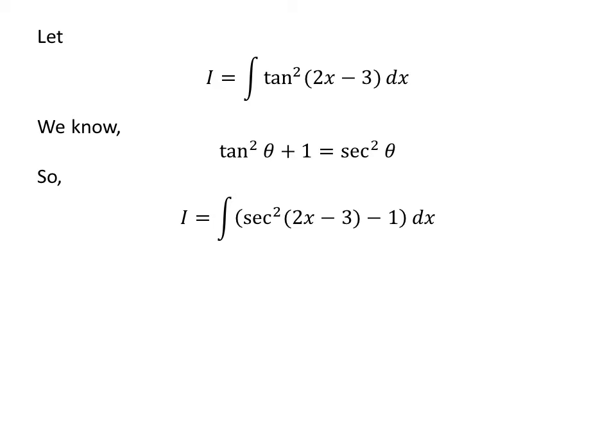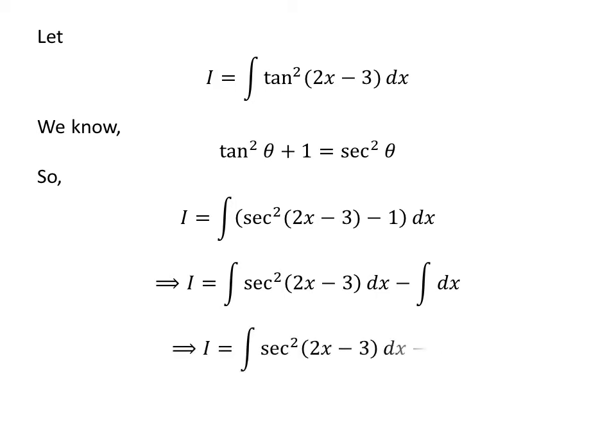Thus, i is equal to the integral of square of sec of 2x minus 3 minus 1, with respect to x. Applying the linearity property of the integral, we get i is equal to the integral of square of sec of 2x minus 3 with respect to x, minus the integral of 1 with respect to x. Since the integral of 1 with respect to x is x, i equals the integral of square of sec of 2x minus 3 with respect to x, minus x.